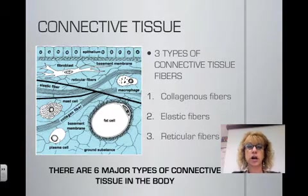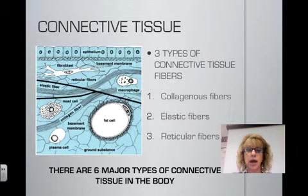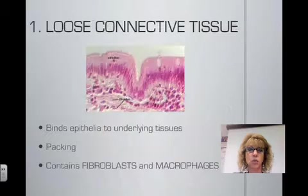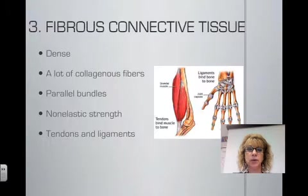Welcome back to an introduction to anatomy and physiology. We left off talking about one of the four major types of tissues in the body, connective tissue. There are six different types of connective tissue. The first one we talked about was loose connective tissue. We then moved on to adipose tissue, which is fat, and we finished the last podcast with fibrous connective tissue.